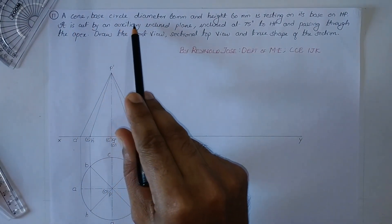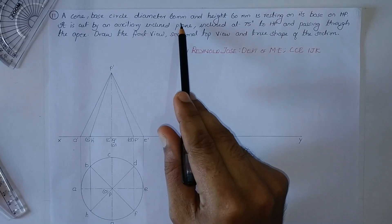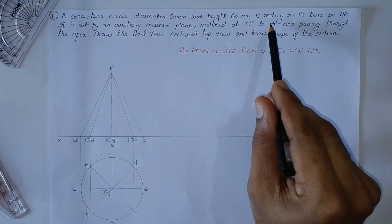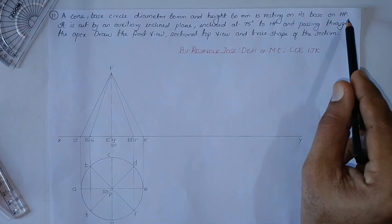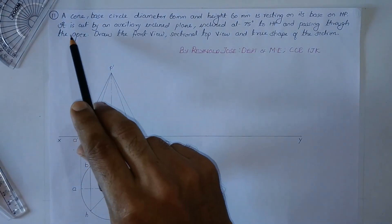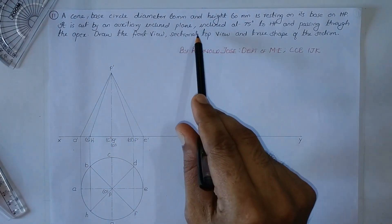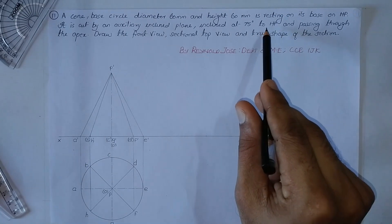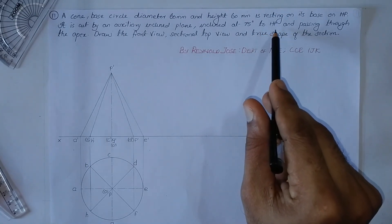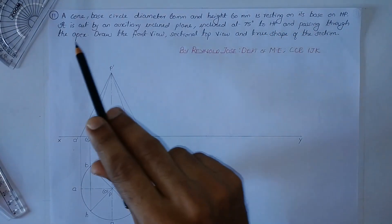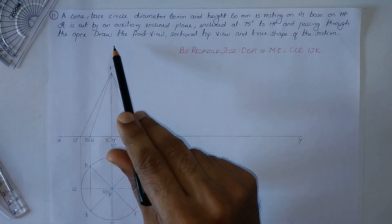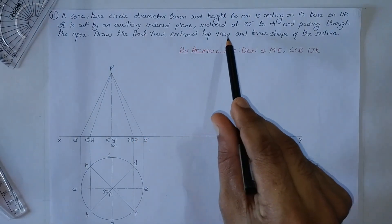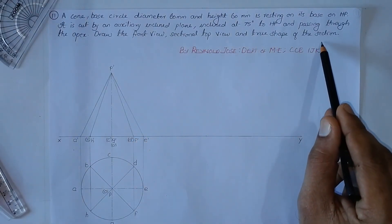A cone of base circle diameter 60 mm and height 60 mm is resting on its base on HP. It is cut by an auxiliary inclined plane inclined at 75 degrees to HP and passing through the apex. Draw the front view, sectional top view, and true shape of the section.